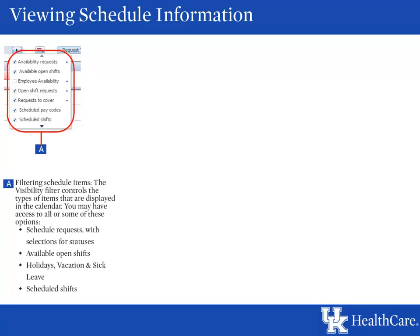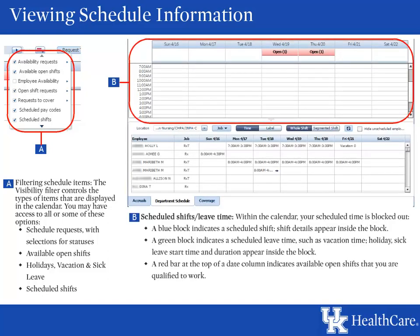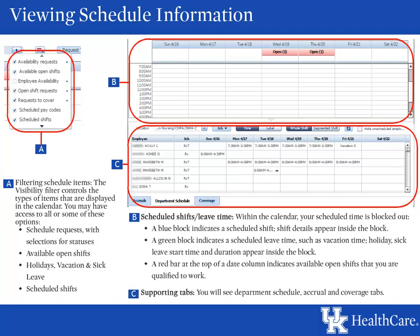This next section shows you how to view schedule information. Section A is your visibility filter controls — you can filter the types of items displayed in the calendar, including schedule requests with status selections, available open shifts, holidays, vacation and sick leave, or scheduled shifts. Section B is your calendar, where your scheduled time is blocked out. A blue block indicates a scheduled shift with shift details inside. A green block indicates scheduled leave time such as vacation, with holiday, sick leave start time and duration shown inside. A red bar at the top of a date column indicates available open shifts you are qualified to work. In Section C, you will see department schedule, accrual, and coverage tabs.